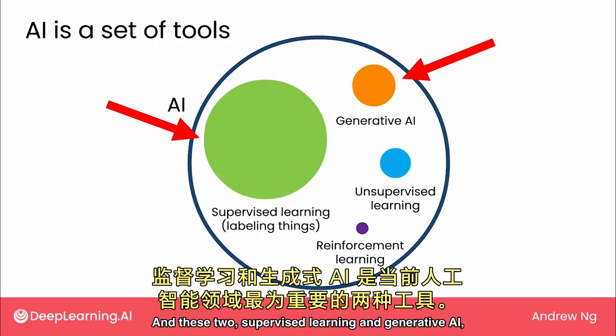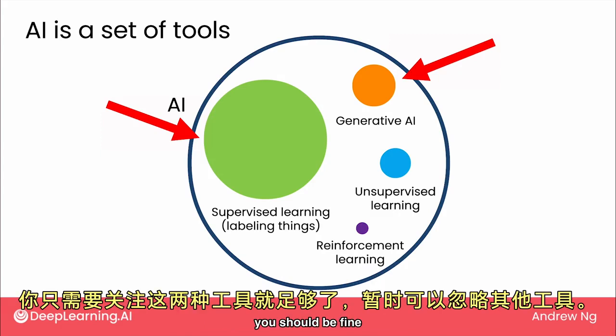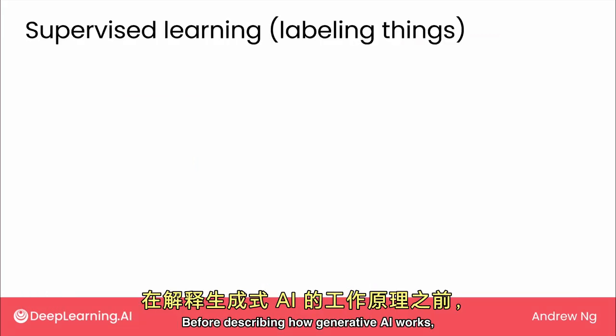And these two — supervised learning and generative AI — are the two most important tools in AI today. And for most business use cases, you should be fine if you just don't worry about the other tools for now.